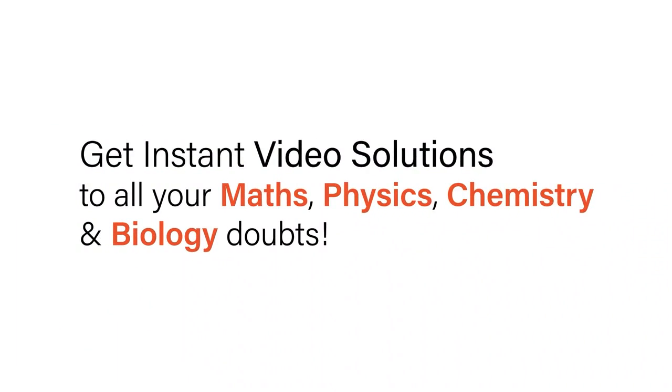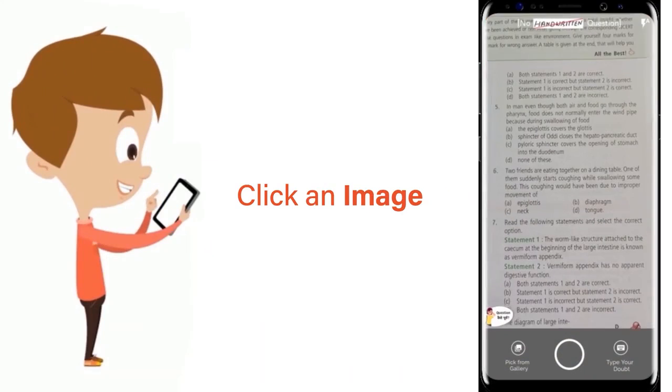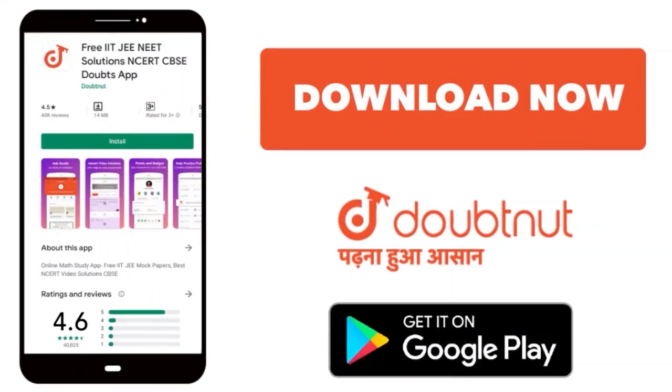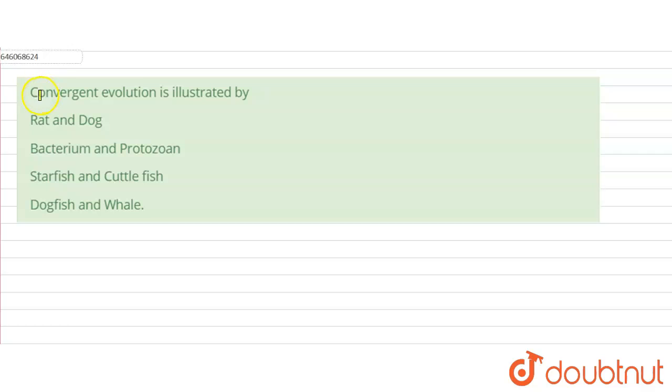With Doubtnet, get instant video solutions to all your math, physics, chemistry, and biology doubts. Just click the image of the question, crop the question, and get instant video solution. Download Doubtnet app today. Hello students, our question is: convergent evolution is illustrated by.